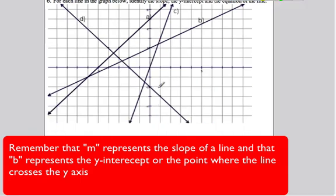And for D, our y-intercept is negative 2, so b is negative 2.